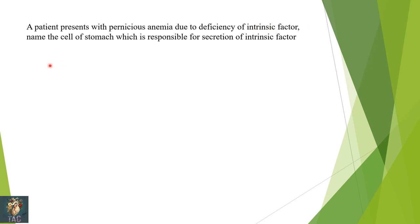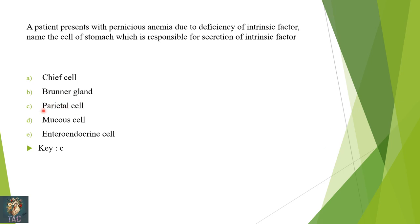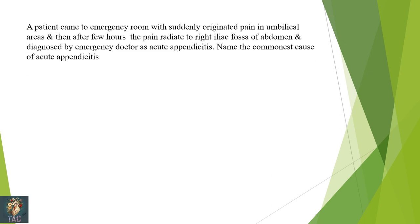A patient presents with pernicious anemia due to deficiency of intrinsic factor. Name the cell of the stomach responsible for secretion of intrinsic factor — chief cell, Brunner's gland, parietal cell, mucus cell, or enteroendocrine cell? We know the parietal cell secretes intrinsic factor in addition to hydrochloric acid. So parietal cell is the correct option.